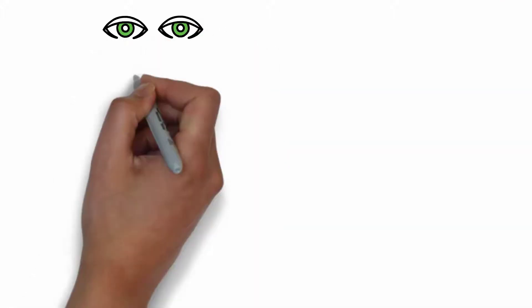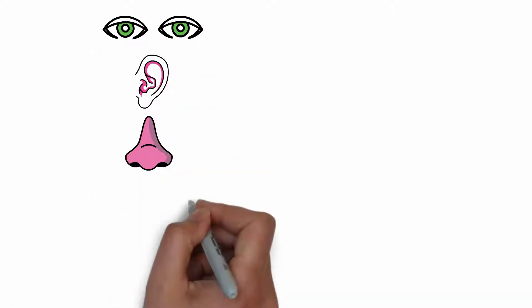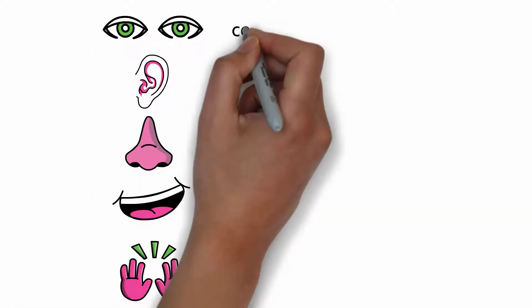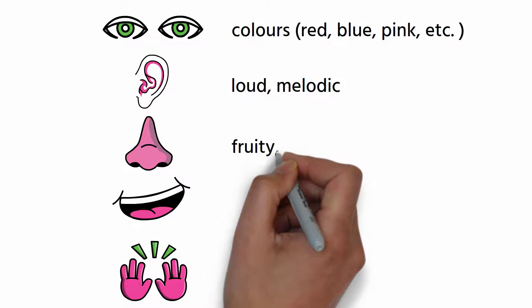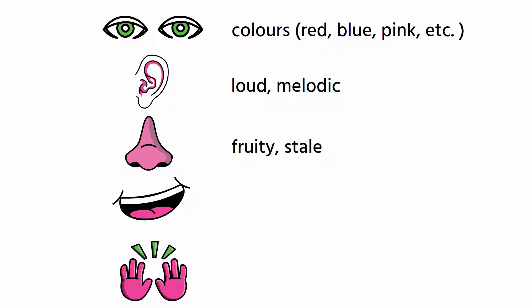There are different words you can use to evoke each sense. For example, you can use things like colors to appeal to sight, words like loud or melodic to appeal to hearing, words like fruity or stale to appeal to smell, words like sour or spicy to appeal to taste, and words like soft or smooth to appeal to touch.